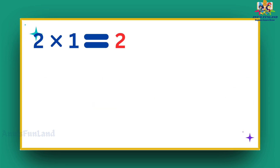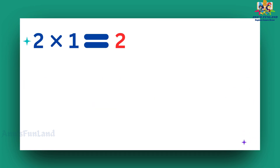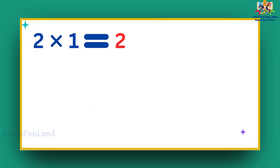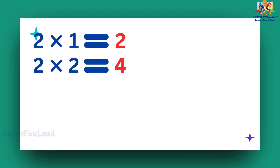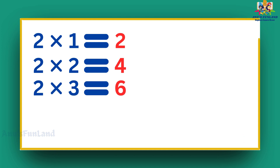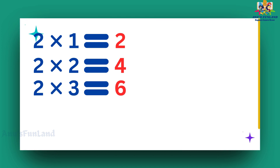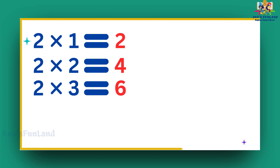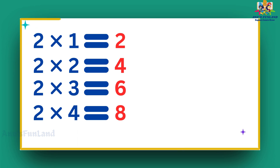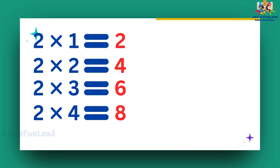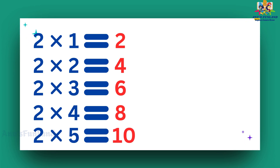Two ones are two. Two twos are four. Two threes are six. Two fours are eight. Two fives are ten.